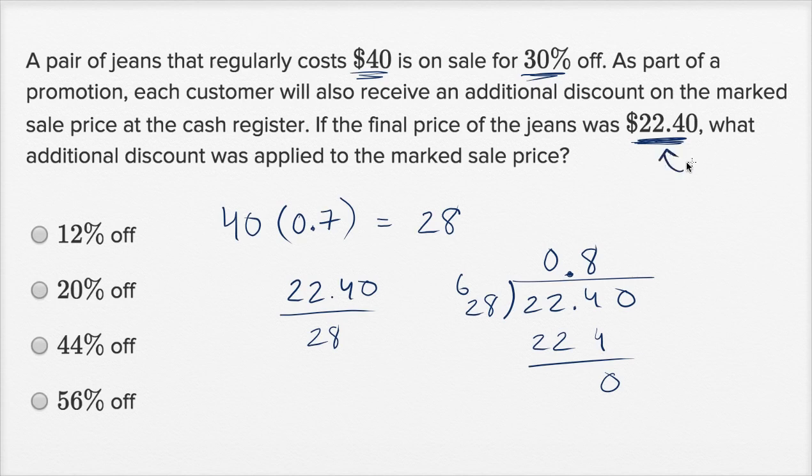So this is 80% of the marked down price. If this is 80% of this, then the additional discount that was taken is going to be 20%. Because once you take 30% off, you would expect to pay $28, but you only paid 80% of that. So they took off another 20%. If you take off 20%, then you're going to pay 80% of the price.